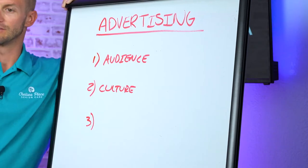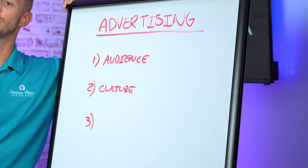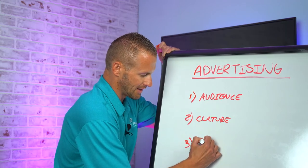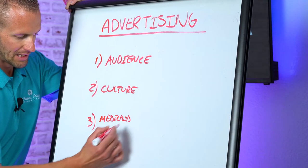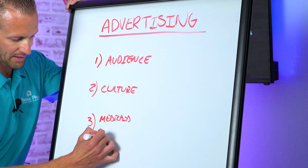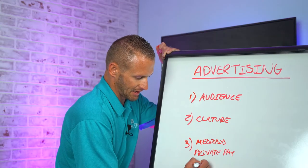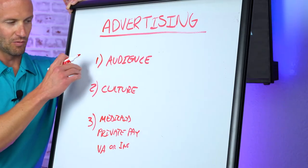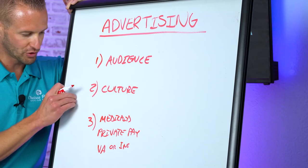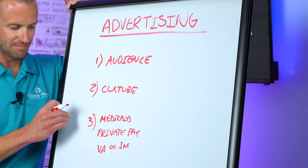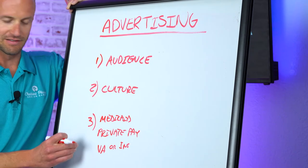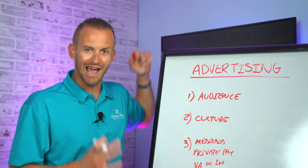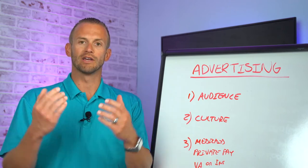Number three is the financial demographics. Am I focusing on the Medicaid population? Am I focusing on private pay? Am I focusing on VA or other insurances? Once I've identified the audience, I know the culture, and I've identified whether it's Medicaid, private pay, VA, or insurance — once I've identified those things, now I can decide where do I go and how do I spend that money.